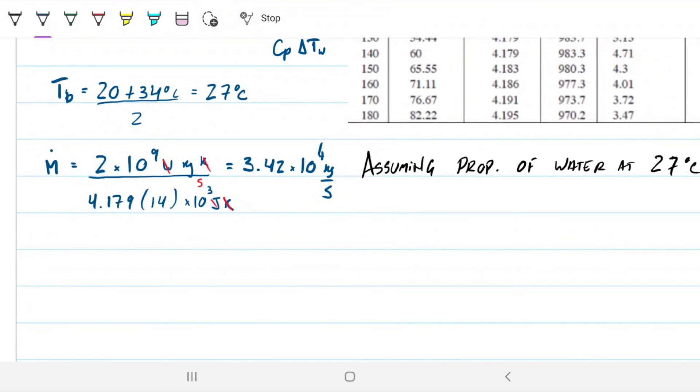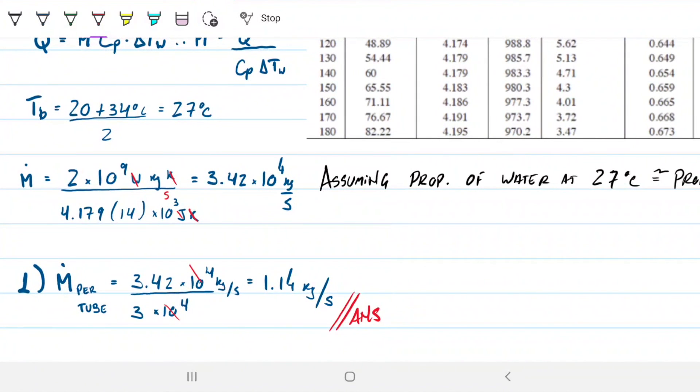However, remember the question asks us to find, so number one asks us to find, what is the mass flow rate per tube, right? And we have 30,000 tubes, all right? So we have 3.42 times 10 to the 4th kilograms per second in, you know, the whole heat exchanger. So if I went per tube, I need to divide that by the number two that I have, if I just leave it at this 3 times 10 to the 4th, so that these guys go away, which is 1.14. Okay, and this is the answer for part one. So what is the mass flow rate per tube? That is 1.14 kilograms per second.